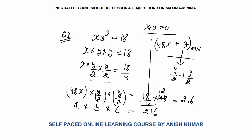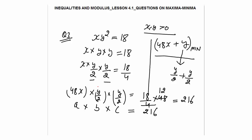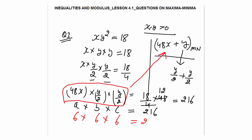So the product of three numbers a × b × c = 216, and their sum is 48x + y/2 + y/2 = 48x + y. Their sum is minimum when all are equal. Equal numbers whose product is 216: 6 × 6 × 6 = 216, so each equals 6. So 48x = 6 and y/2 = 6, meaning y = 12. Minimum value = 6 + 12 = 18.